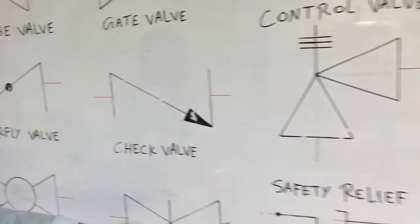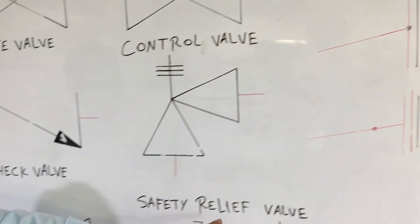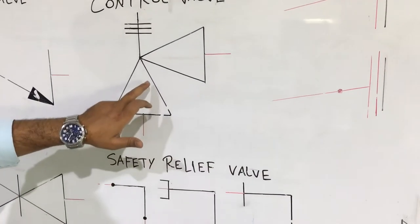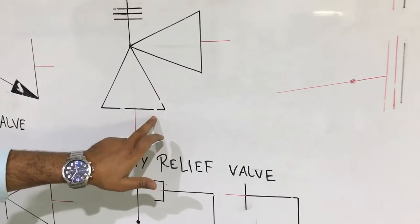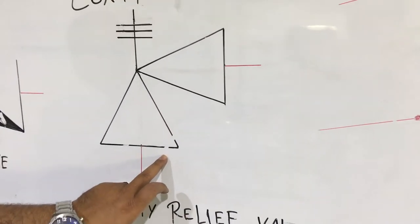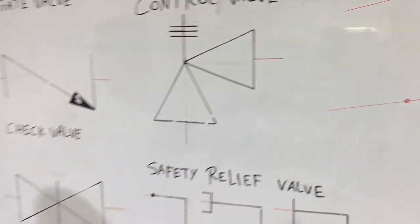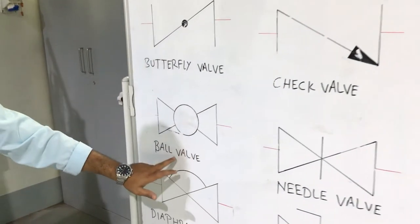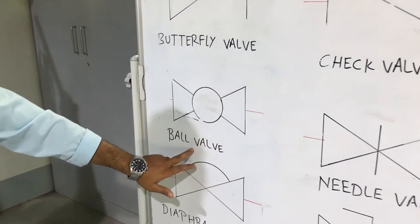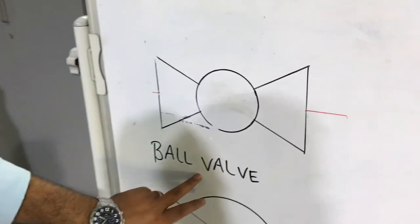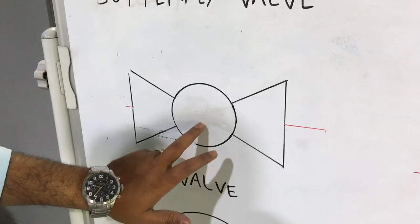This one is the safety relief valve — see, this is the symbol of safety relief valve. This one we have ball valve; the symbol of ball valve is this one.